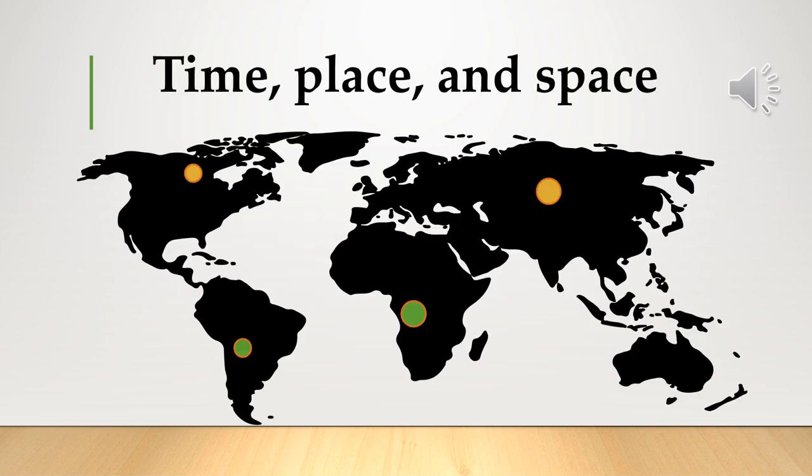Time, place, and space: When we talk about time, we refer to the consideration of historical and temporal aspects of places and spaces. Place refers to the characteristics and attributes of locations on the Earth's surface. Space involves the spatial dimension of geography and the distribution of features, phenomena, and human activities across the Earth's surface.